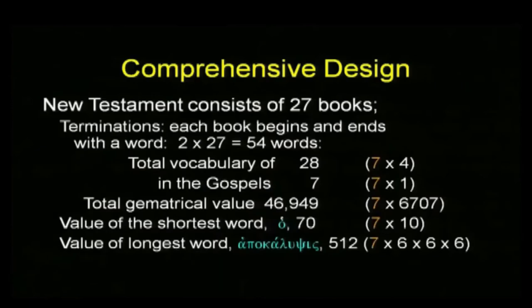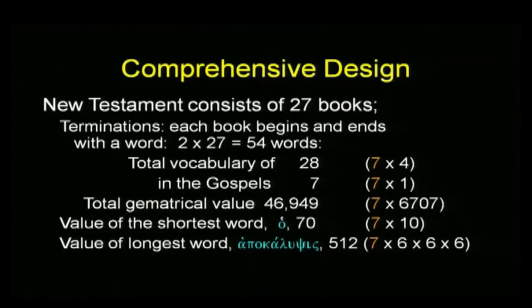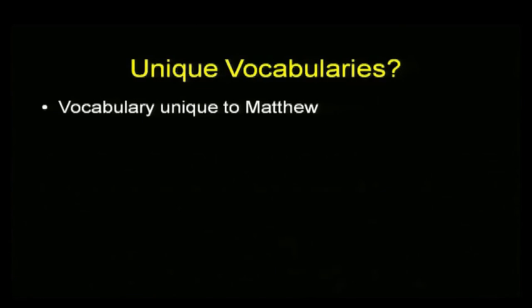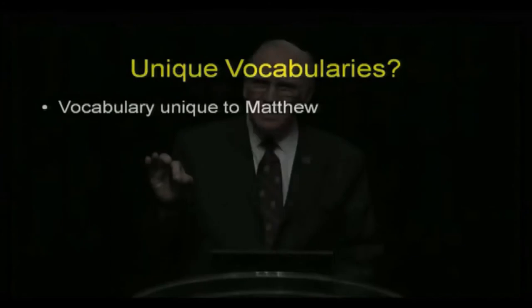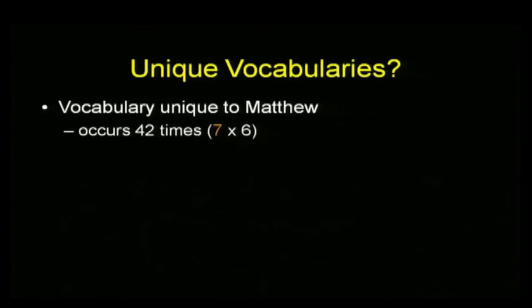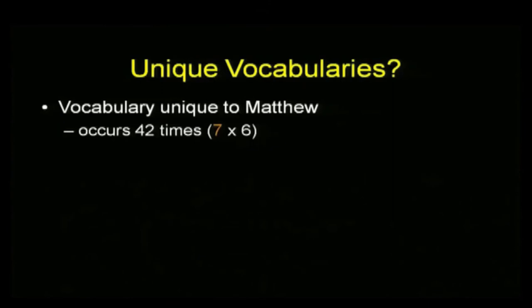I want to mention just one that to me is the most staggering of all. The New Testament consists of 27 books — they each have a word that starts them and a word that ends them, giving 54 words. The vocabulary of those words totals 28 words in the Gospels. The shortest word, the longest word — each is a multiple of seven. The vocabulary in the Gospel of Matthew that is unique to Matthew is a multiple of seven: it occurs 42 times (7 times 6), with 126 letters (7 times 18). The only property these words have is that they are unique to the Gospel of Matthew, and they come out precisely as a multiple of seven.